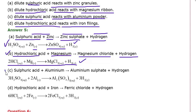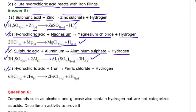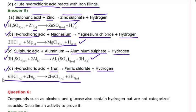For answer 5c: sulfuric acid plus aluminium gives aluminium sulfate and hydrogen. The chemical equation is H2SO4 (aqueous) + Al (solid) → Al2(SO4)3 (aqueous) + H2 (gas). For answer 5d: hydrochloric acid plus iron gives ferric chloride and hydrogen, also known as iron chloride. The chemical equation shows HCl, iron, ferric chloride, and hydrogen as the components.